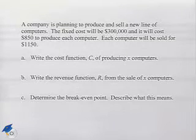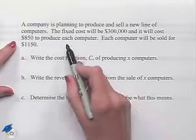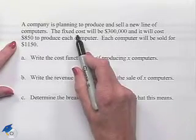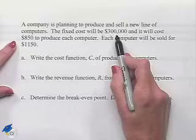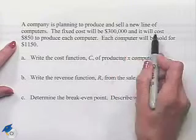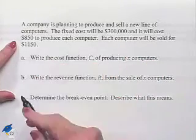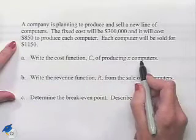Part A: Write the cost function C of producing x computers. Well, the second sentence tells us about cost. We're told that the fixed cost is $300,000, and then additionally it will cost $850 for each computer.